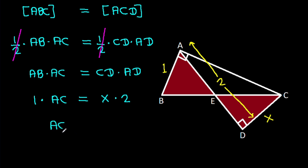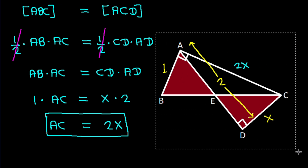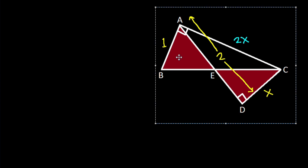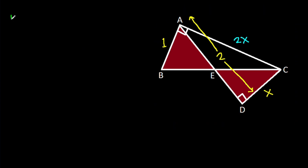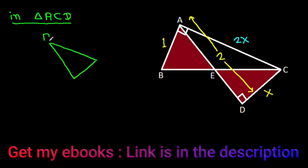From AB times AC equals CD times AD, with AB equal to 1 and AD equal to 2 and CD equal to X, we get AC equal to 2X. In triangle ACD, angle ACD is 90 degrees, AC is 2X, CD is X, and AD is 2.